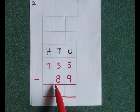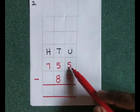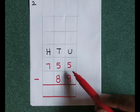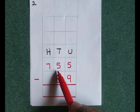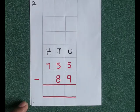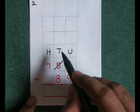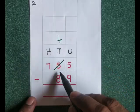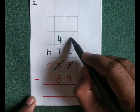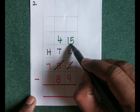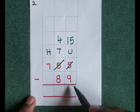755 minus 89. We have to start from the units place. 5 minus 9 — we can't do that, 5 is smaller than 9. So I will borrow from the tens place. There are 5 tens; if you borrow 1 ten from 5 tens, here you have 4 tens. That 1 ten means 10 units, plus 5 gives us 15. 15 minus 9 is 6.